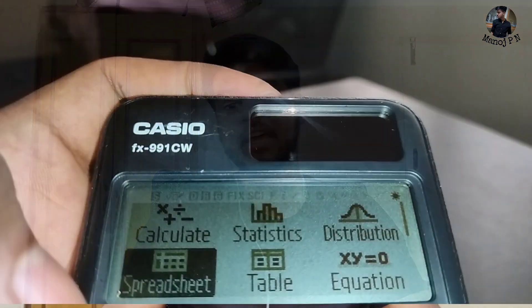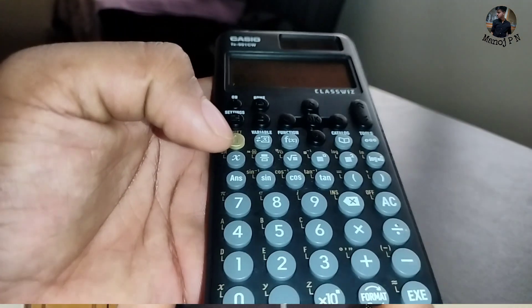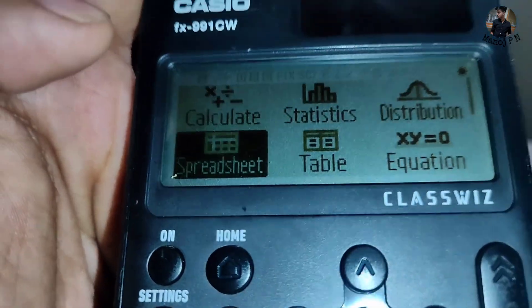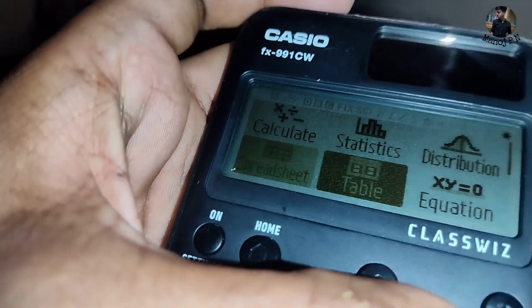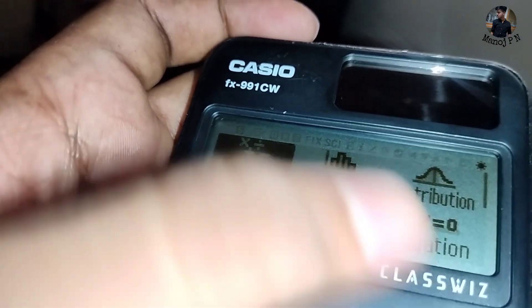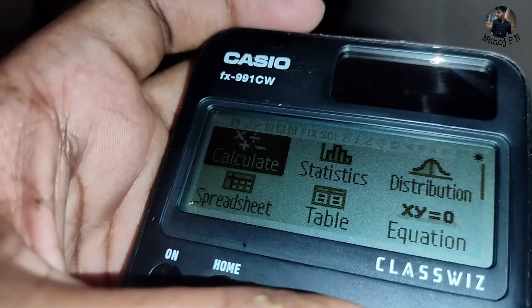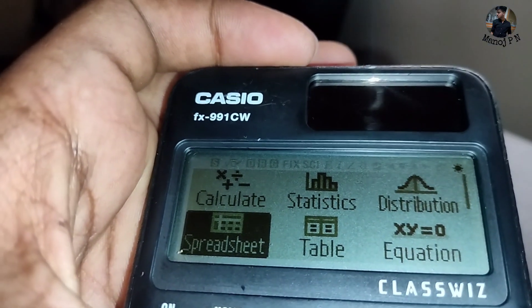First of all, this is the slim and sleek design. You will need to use the design and consider the weight of the calculator. The next feature is the display — it will be a compact, simple, and user-friendly display. There will be a wide display. All operations will be accessible, including statistics and distributions.